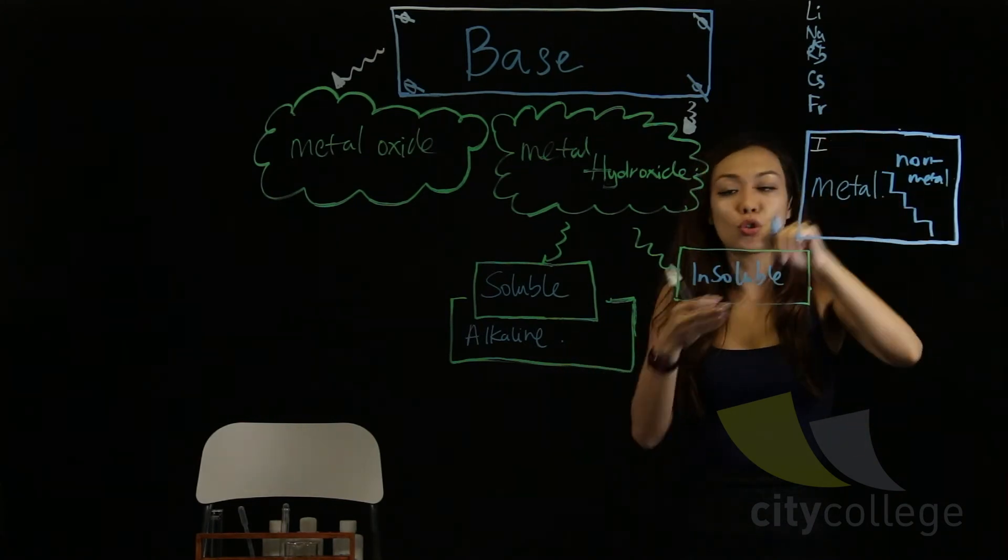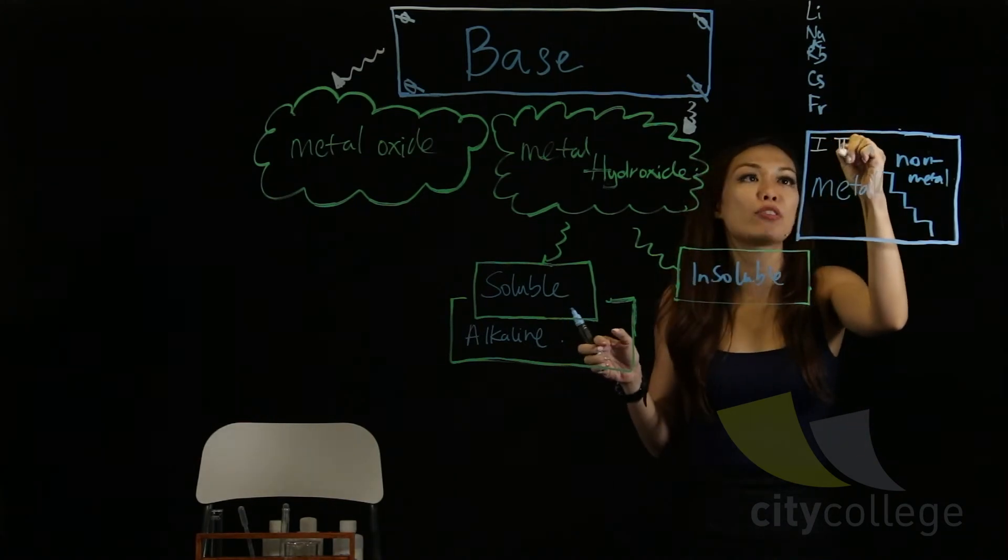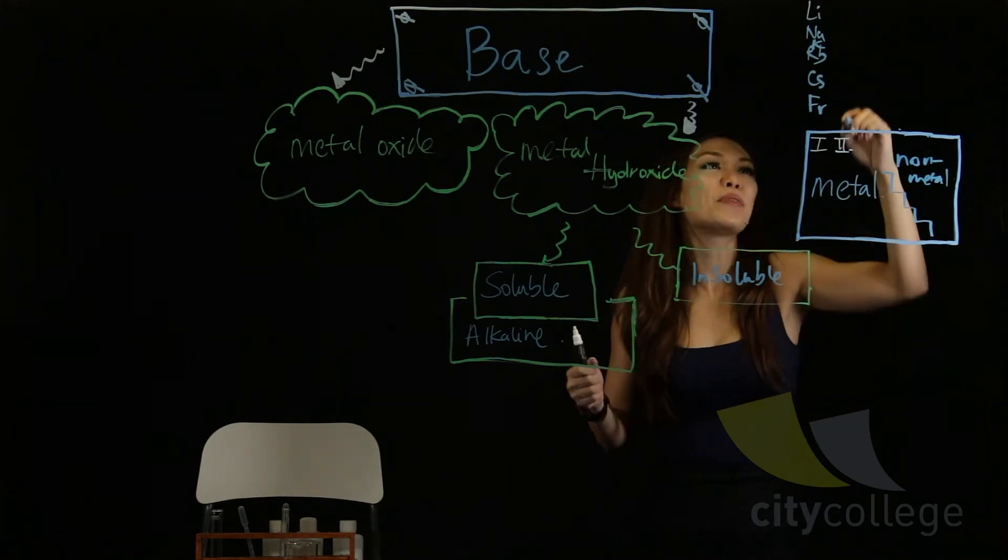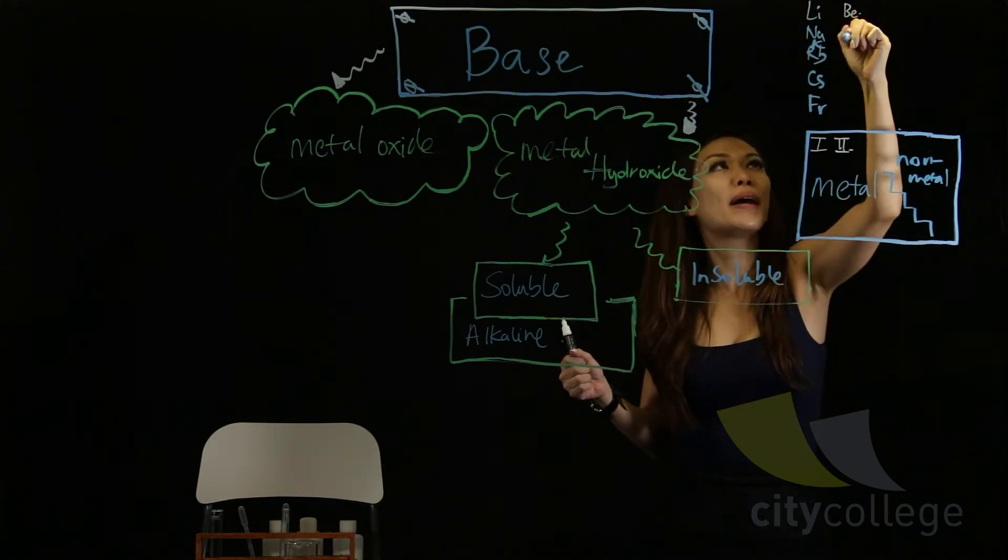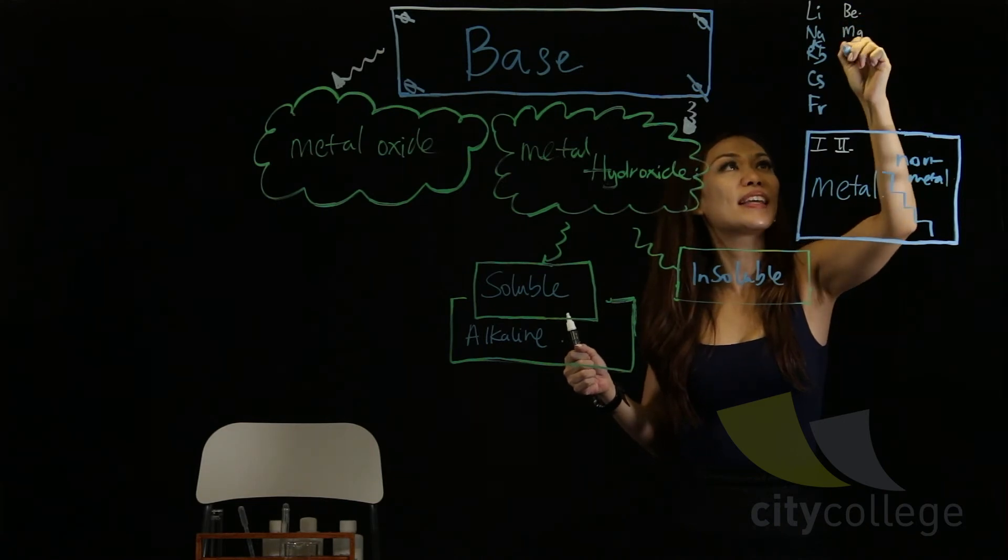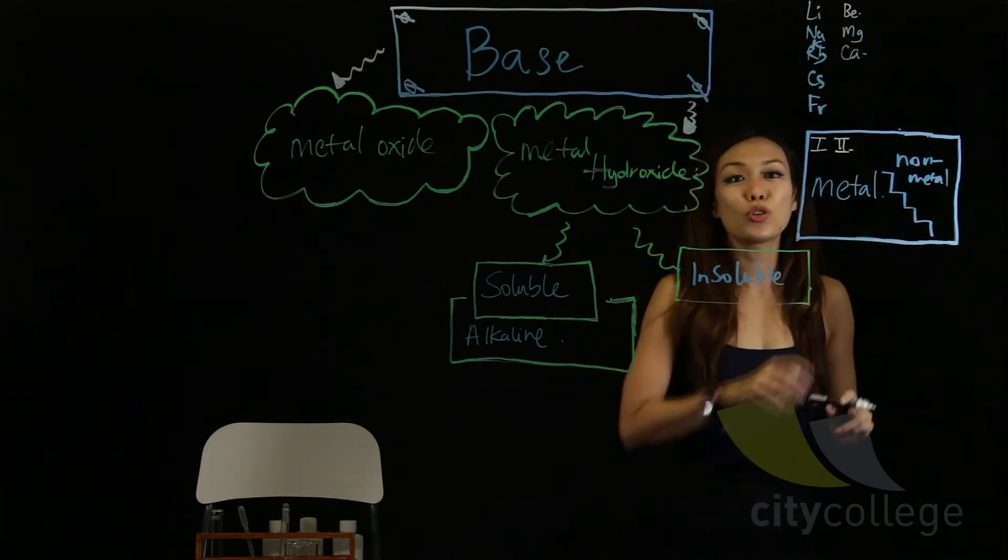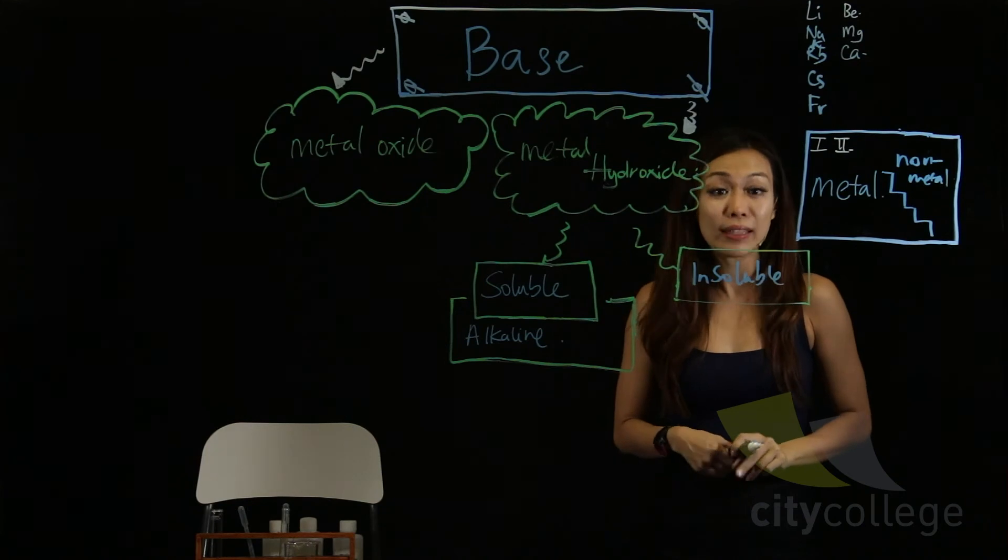Now, group two here is a little bit special. Why is it so special? Because you have beryllium, magnesium, and calcium. Now, group two is called alkali earth metal.